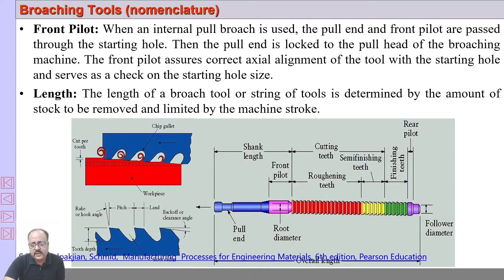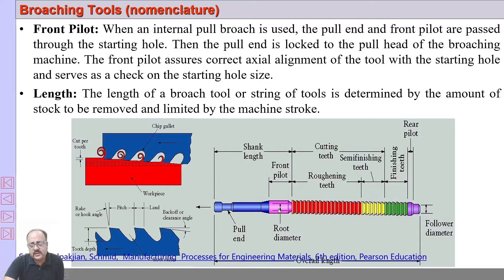The shank is that part of the tool which is gripped and held to be driven. This is a pull broach, so it will be gripped at the shank and pulled. The front pilot maintains the alignment of the tool with the starting hole — it is equal to or slightly less than the starting hole diameter. The rear pilot is almost equal to the diameter of the finished hole. In between, you have the cutting teeth.